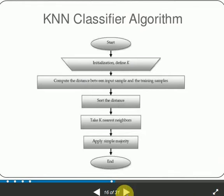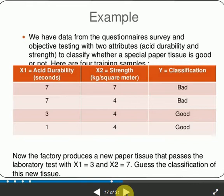Here is a question: We have data from a questionnaire survey and objective testing with two attributes—acid durability and strength—to classify whether a special paper tissue is good or not. We are given four training samples. We have the input data X1 and X2 as acid durability and strength.